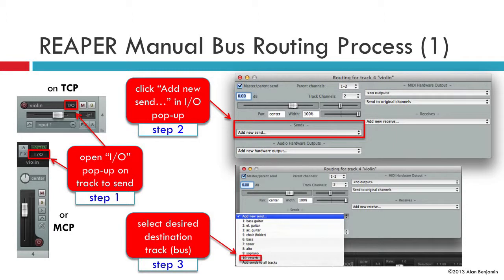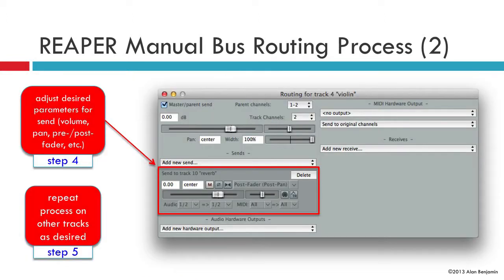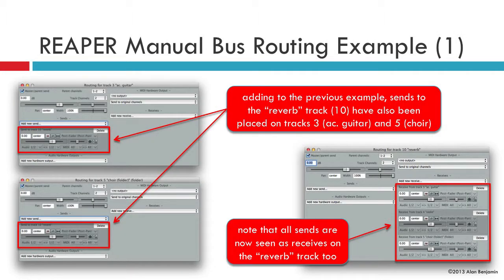That will present a pulldown where you can choose your desired destination track. In this case I've chosen a reverb on track 10. Once a destination track is selected, a box will appear with corresponding settings including volume, pan, and pre or post fader sending. In this example I added two more sends to the same reverb track, then opened up the I/O on that reverb track where you can see all three receives are present.